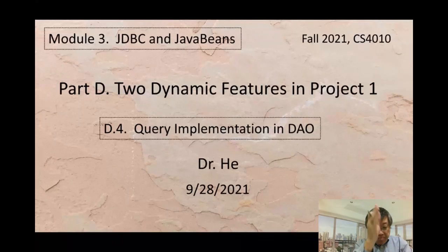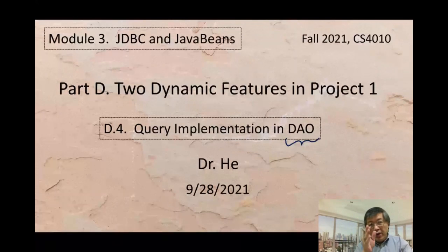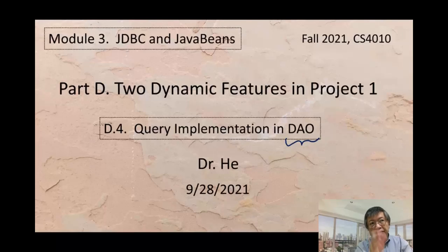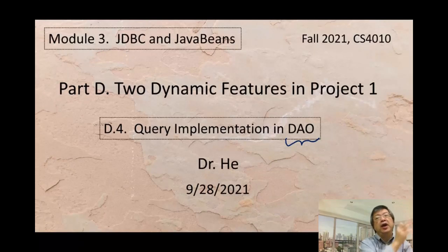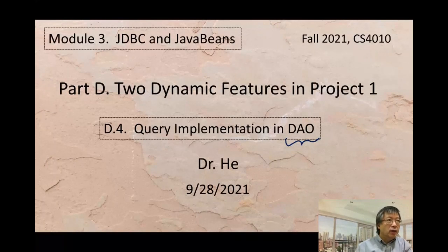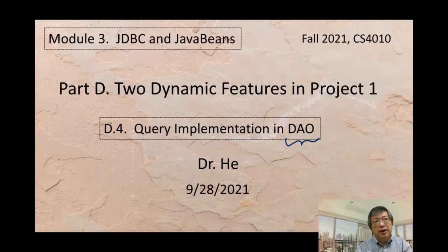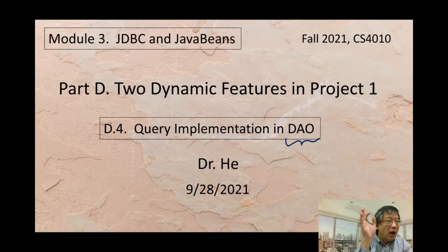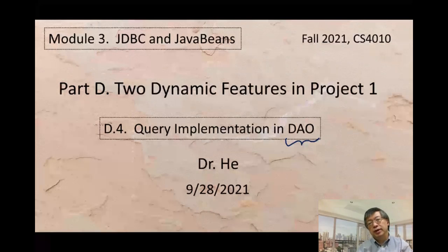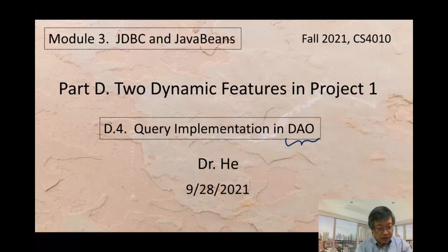D.4, query implementation in DAO, data access object. When we have a new query, the most efficient way is we put it in the appropriate DAO Java class. Here, we will do it in that way. Some students already asked me about that. That's correct, so they guess it should be there. Here, let me show you how do we do it in problem DAO class.